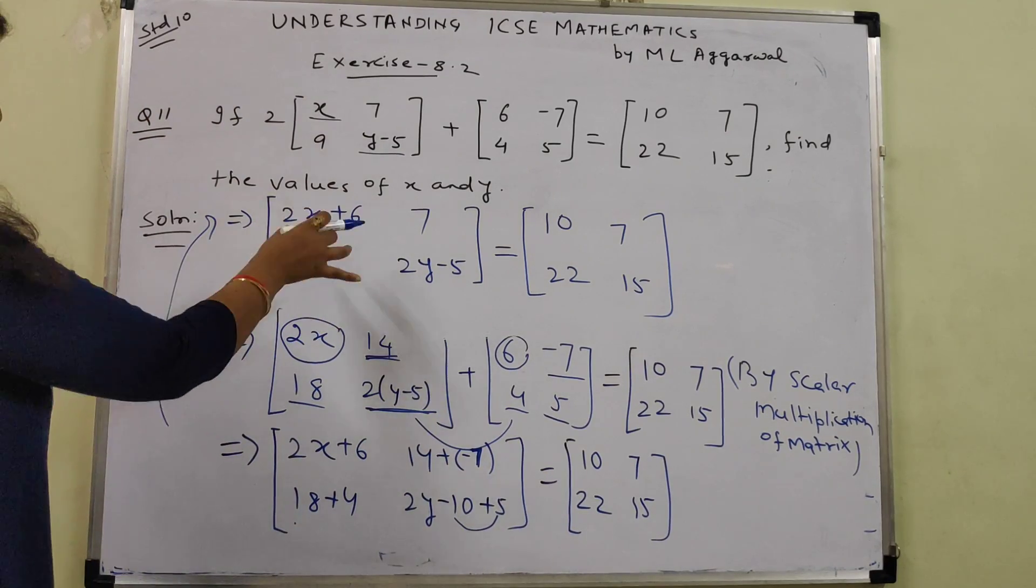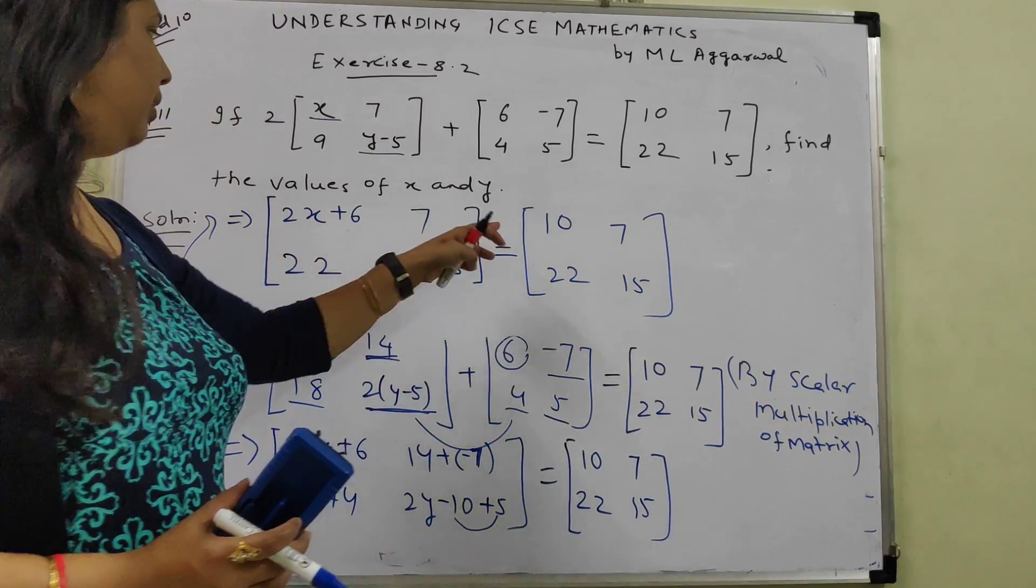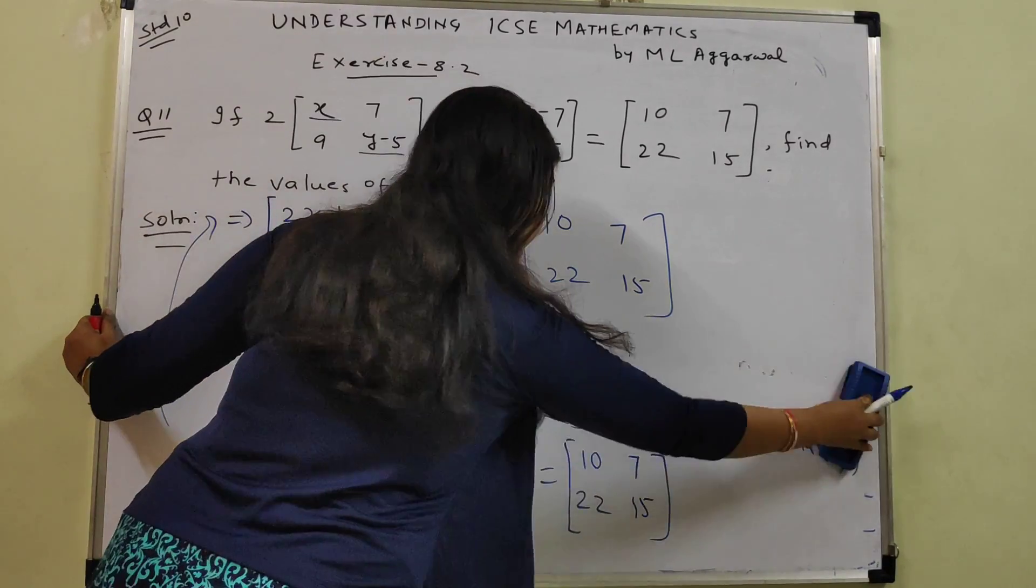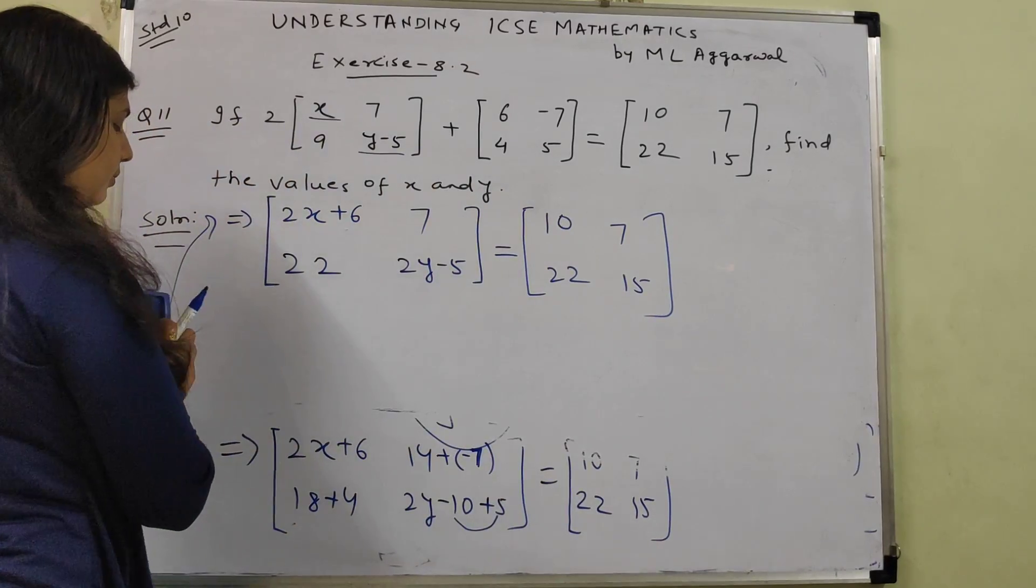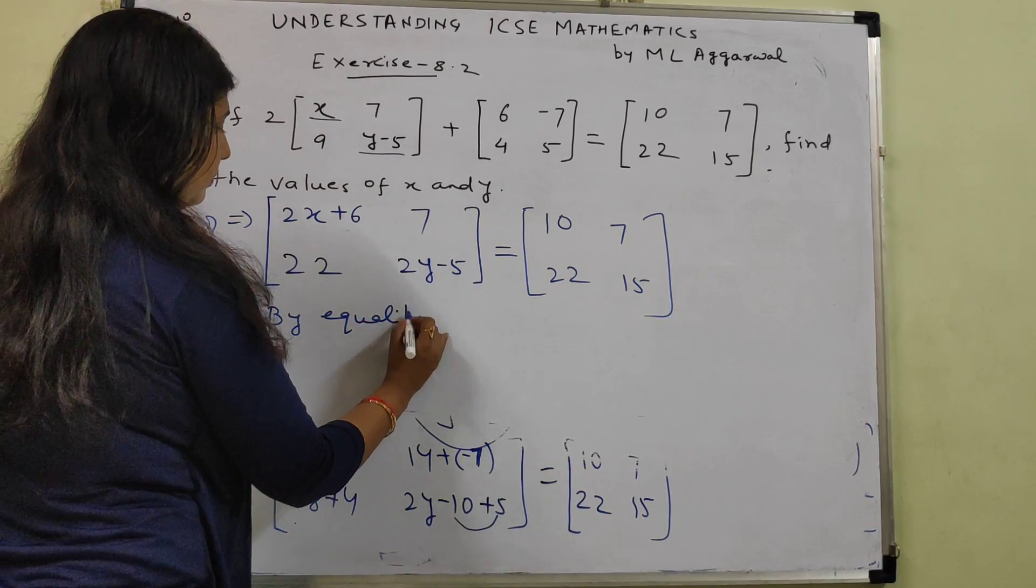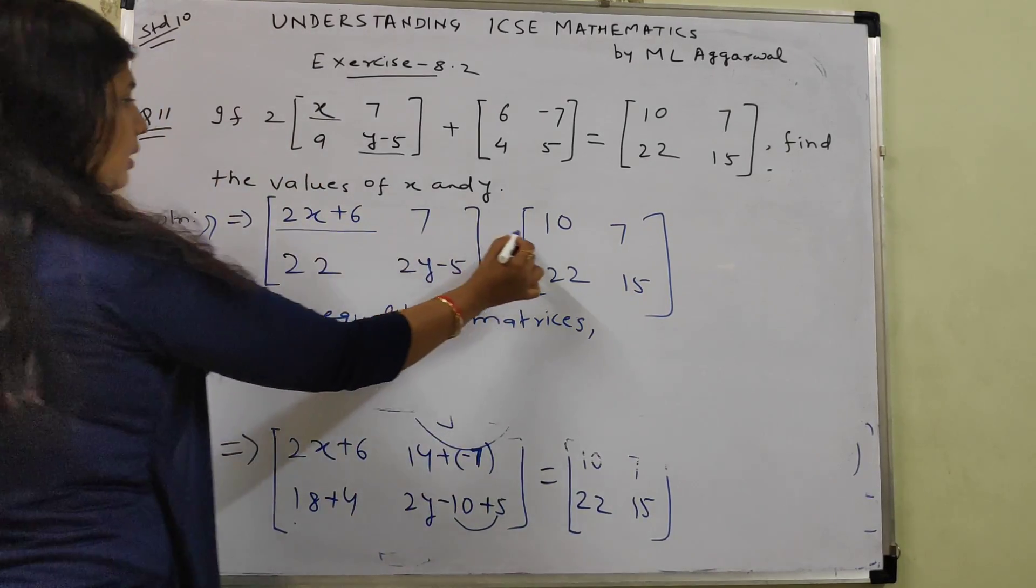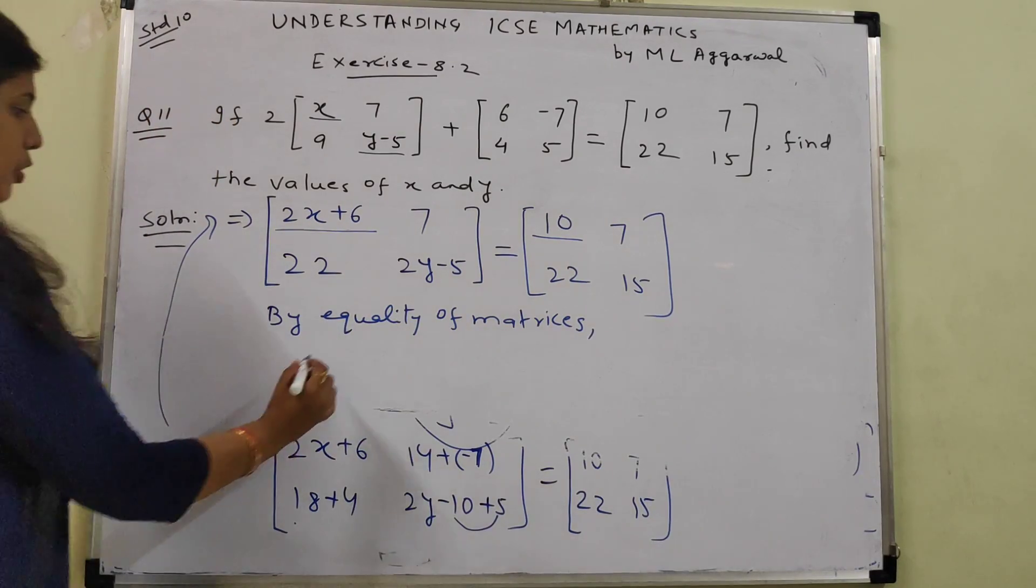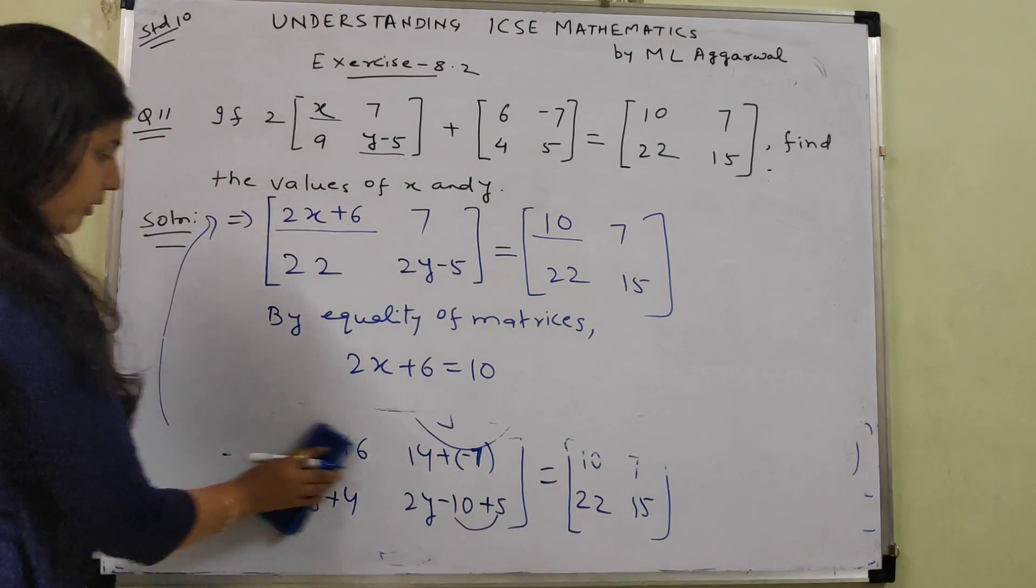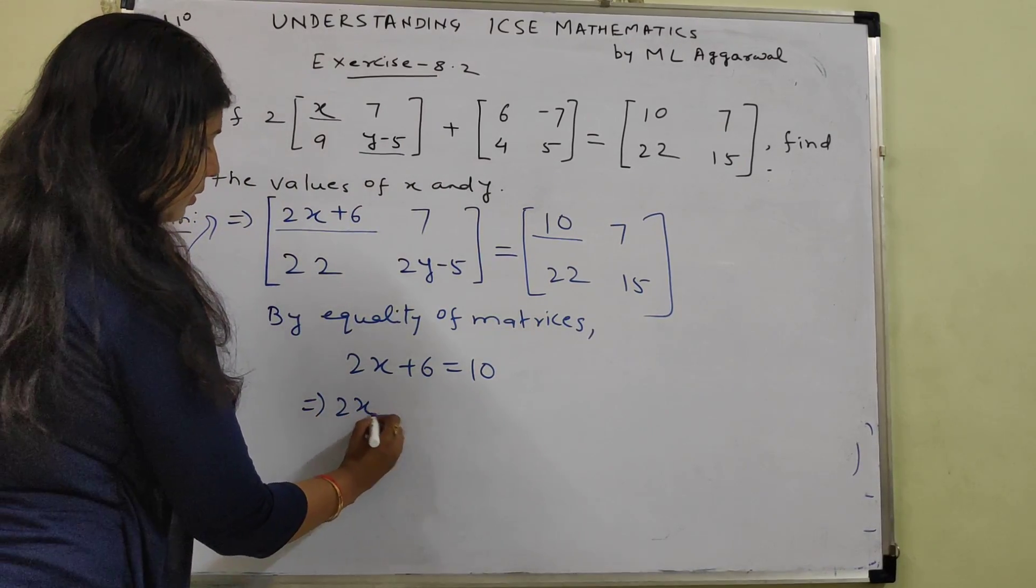Now further no addition subtraction left inside this matrix. By equality of 2 matrices, we can equate the terms where X and Y are involved. By equality of matrices, corresponding elements are going to be same. So 2X plus 6 equal to 10. We solve it first, and then we will move ahead for Y.